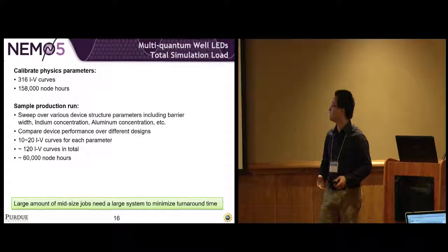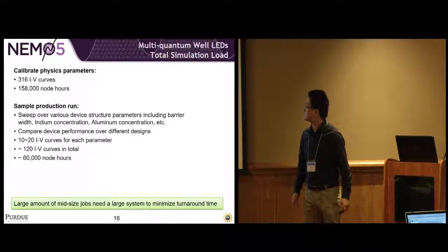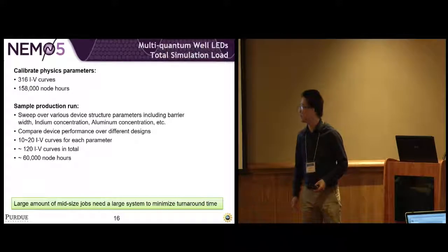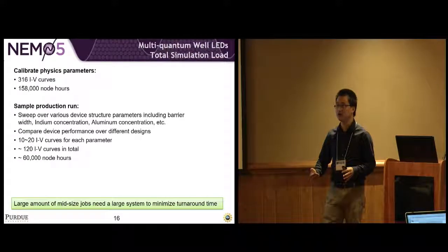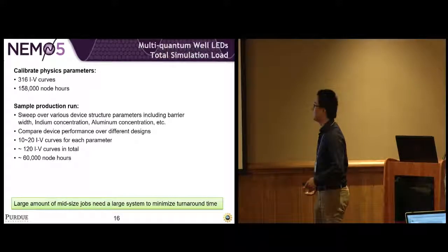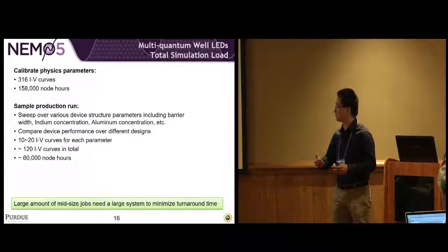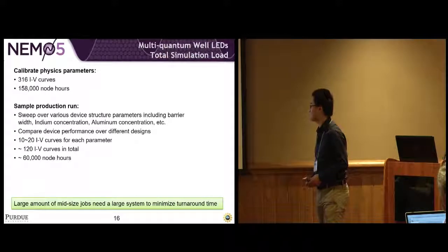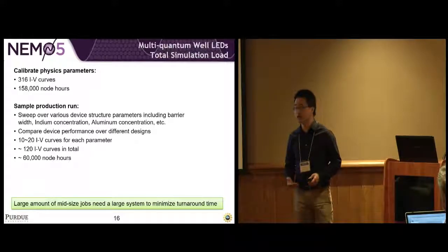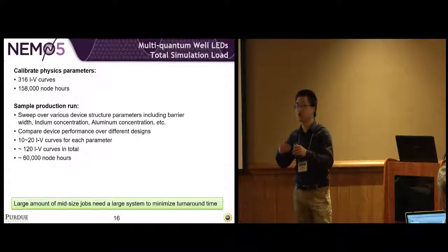We need 10 to 20 IV curves for each point in the parameter space, and roughly 120 IV curves in total for one design. That requires about 60,000 node hours. We have a large amount of mid-sized jobs that we need a large system to minimize the turnaround time of the whole ensemble.